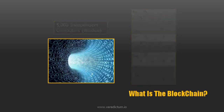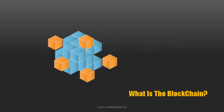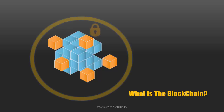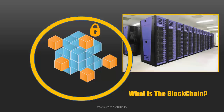That piece of data is locked together with other pieces of data into a block. This block of data is locked with a mathematical problem that needs to be solved. In the public blockchain, the Bitcoin miners solve that mathematical problem. And by solving that mathematical problem, they actually get rewarded with Bitcoin.